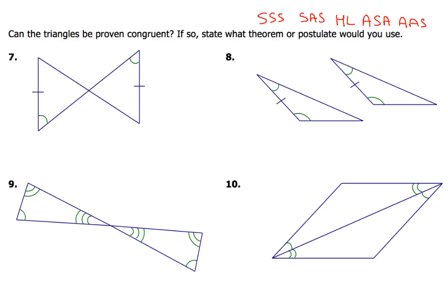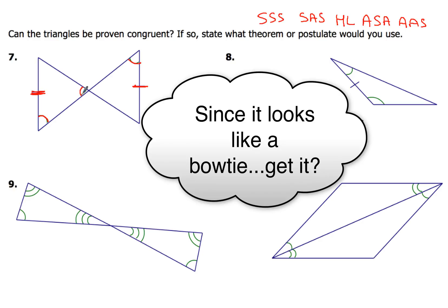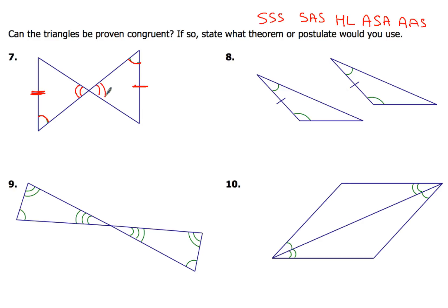In example 7, we can easily see that one side is congruent to another side, and we've got an angle that's congruent to another angle. I like to call this a 'bowtie' problem because right in here we have two angles that are congruent because they are vertical angles — and we know that all vertical angles are congruent. So now we've got a second pair of congruent angles in our triangles, and we can go ahead and prove those two triangles congruent by the angle-angle-side congruence theorem.